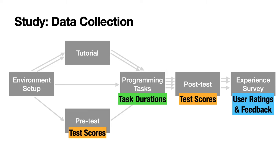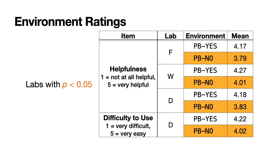Now, the environment ratings. At the end of a lab, students gave two ratings to the environment they used through a five-point Likert scale: how the environment helped them understand the lab, and how difficult it was to use the environment. We conducted Mann-Whitney tests on both rating items in each lab to compare ratings from students using PBS and PBNO, using 0.05 as the threshold. This table shows the labs where ratings had p-values less than 0.05, meaning the differences in ratings between students using PBS and PBNO are statistically significant.